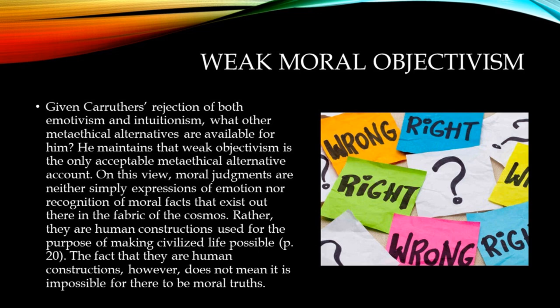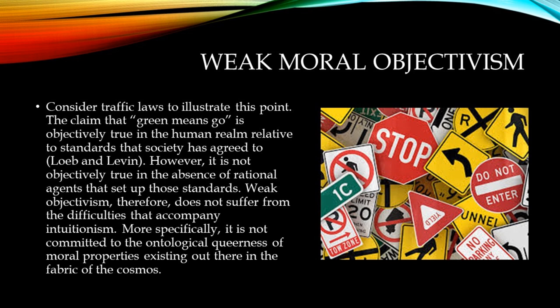Given Carruthers' rejection of both emotivism and intuitionism, what other meta-ethical alternatives are available for him? He maintains that weak objectivism is the only acceptable meta-ethical alternative account. On this view, moral judgments are neither simply expressions of emotion, nor recognition of moral facts that exist out there in the fabric of the cosmos. Rather, they are human constructions used for the purpose of making civilized life possible. The fact that they are human constructions, however, does not mean it is impossible for there to be moral truths. Consider traffic laws: the claim that 'green means go' is objectively true in the human realm relative to standards that society has agreed to, but it is not objectively true in the absence of rational agents that set up those standards. Weak objectivism, therefore, does not suffer from the difficulties that accompany intuitionism, since it is not committed to the ontological queerness of moral properties existing out there in the fabric of the cosmos.